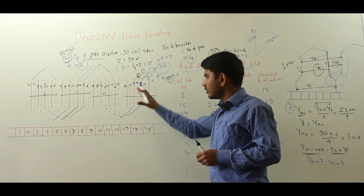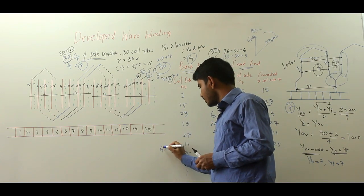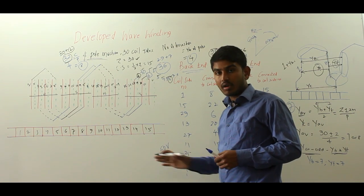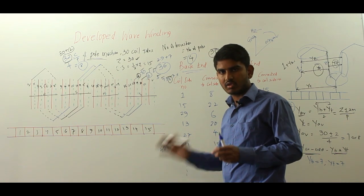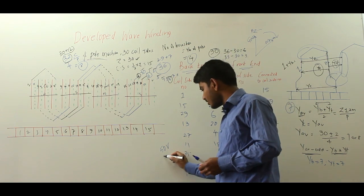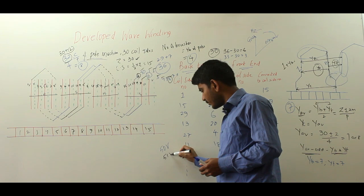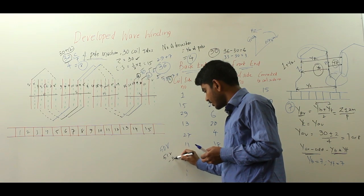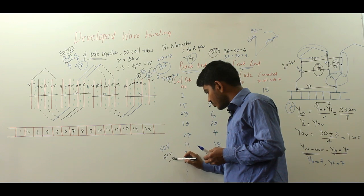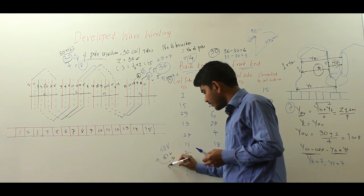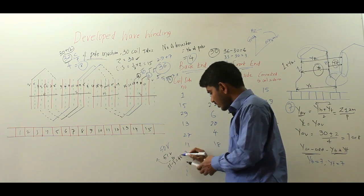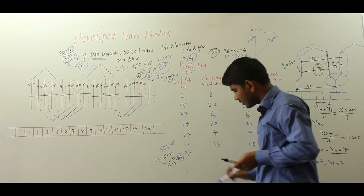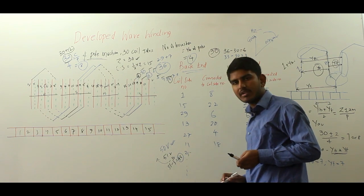For example, suppose the required EMF is 50 volts. Without armature reaction the winding generates 51 volts. When armature reaction causes a drop of 3 volts, the generated EMF becomes 51 − 3 = 48 volts, which is below the required 50 volts. So we need to reduce the voltage drop caused by armature reaction.